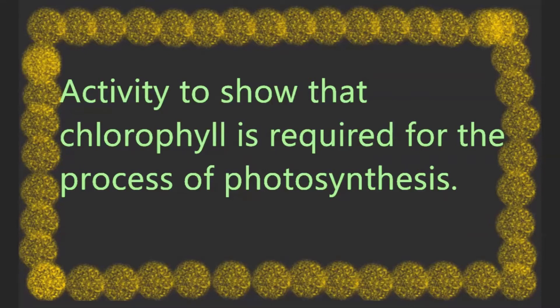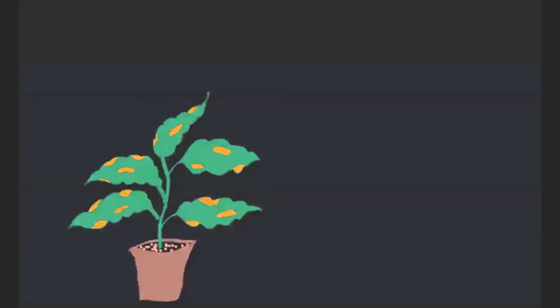For this activity we will take a potted plant with variegated leaves, meaning the plant has leaves with yellow and green patches. Now we will keep this potted plant for destarching in the dark.